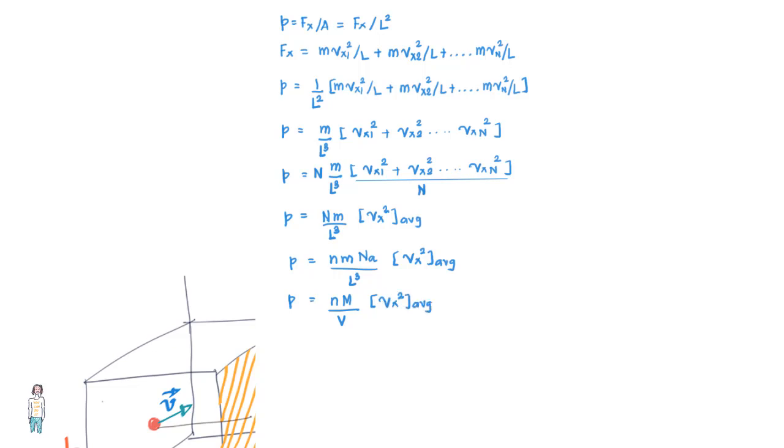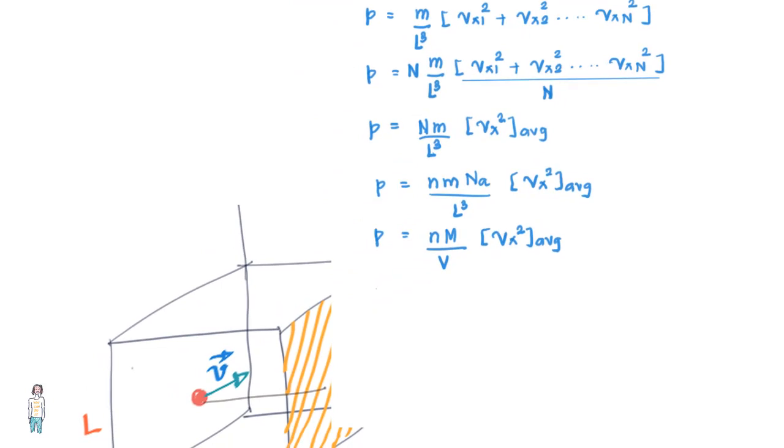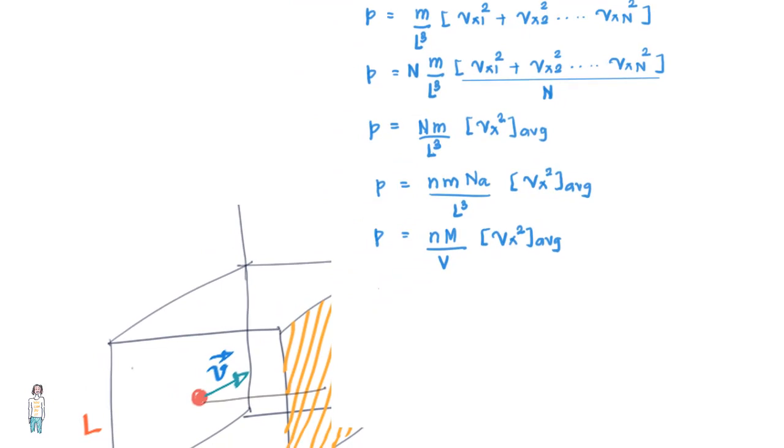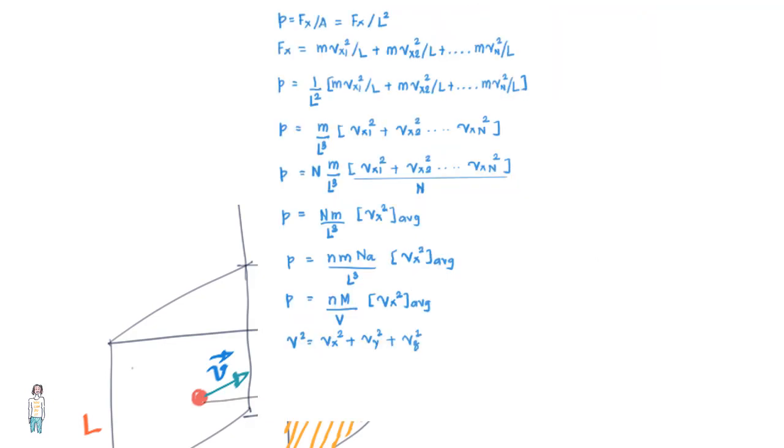Now if you take any molecule we can say that the square of its velocity equals the sum of the square of its respective components: vx squared plus vy squared plus vz squared. Because the molecules are moving randomly in all directions, we could say that the average speed of the square of velocity of each component should be the same, or vx squared should equal vy squared should equal vz squared.